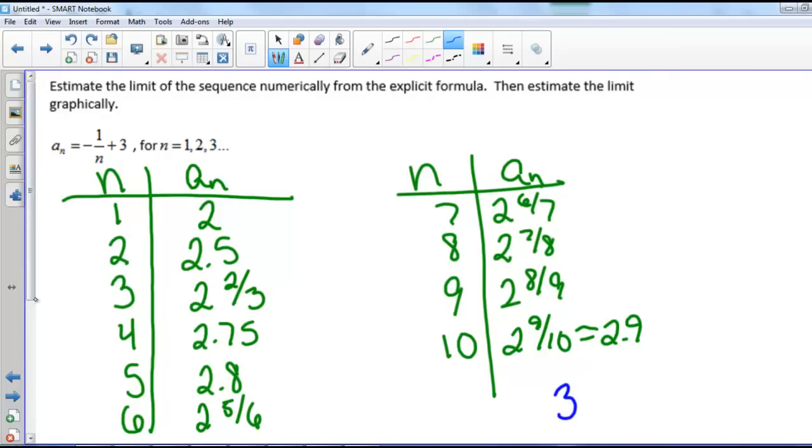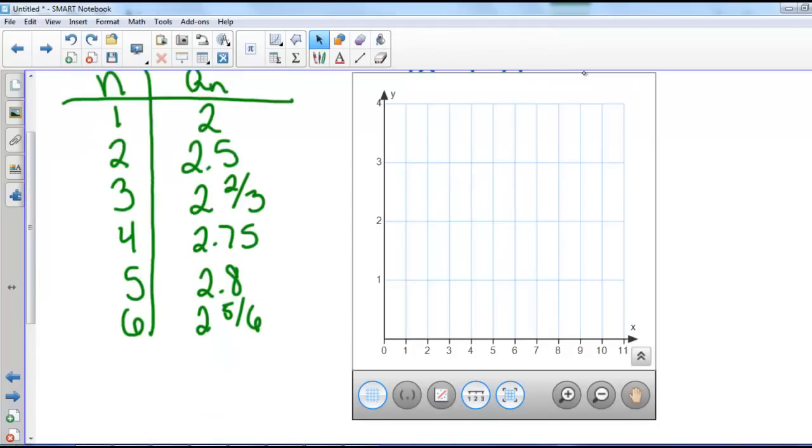Now we can also estimate this graphically. If we were to graph all of these terms, so we have n down here and a sub n on what's usually our y-axis. When n is 1, we get 2. When n is 2, we get 2.5. When n is 3, we get 2 and 2 thirds.